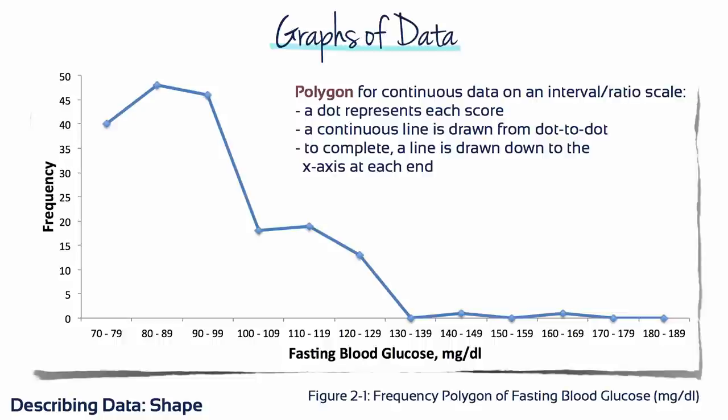Group data, which measure continuous variables on an interval or ratio scale, can be summarized graphically using the frequency polygon. This is a dot and line graph, where the dot is the midpoint of each interval and the line connects each dot.